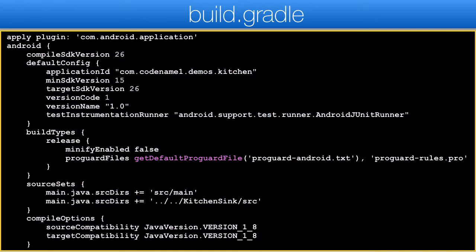The next step is to edit the build.gradle file and add support for our sources. Notice that there are two build.gradle files in the project — you will only need to edit the one for the Android project itself, which in my case was marked as module colon app. After you make changes to system files, Android Studio offers to sync the project again, which you should accept.